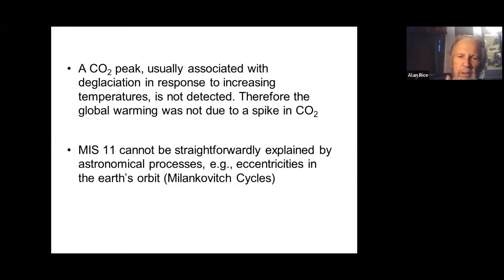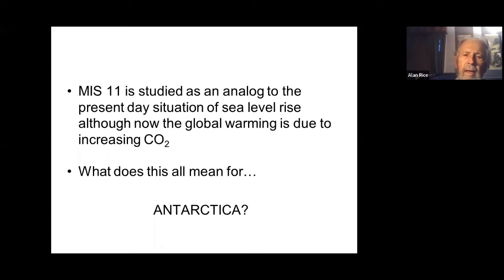A CO2 peak was not associated with any of this as it is now, so global warming back then was not due to a spike in CO2, but to shrinkage of the Antarctic ice sheets. MIS 11 cannot be explained by astronomical processes like eccentricities in the Earth's orbit with the Milankovitch cycles. It's considered an analog to the present-day situation of sea level rise, although the global warming today is due to CO2 as opposed to what happened at MIS 11.